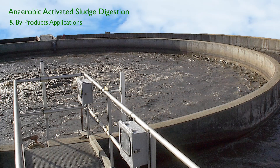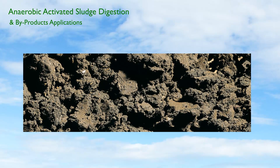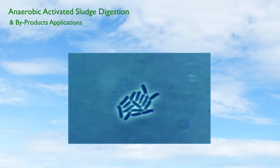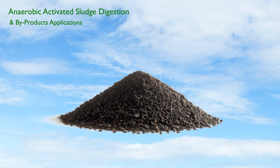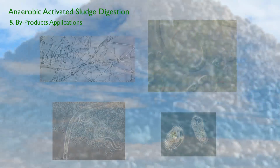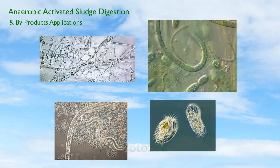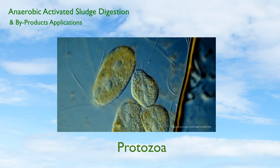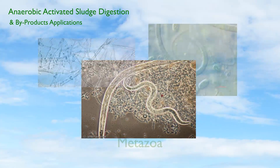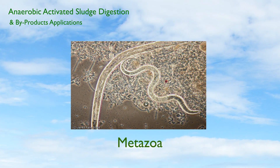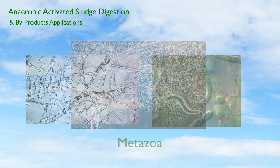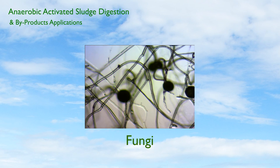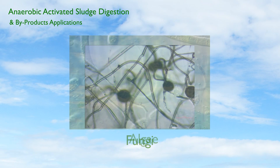One of the main byproducts of municipal water plants is sludge. Sludge is composed of more than 95% bacteria, and also of higher organisms such as protozoa, metazoa, fungi, and algae.